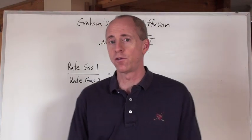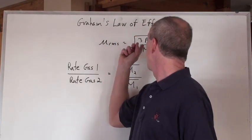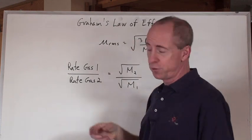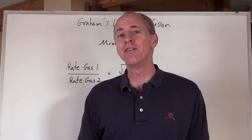So there's something cool that you can derive from that root mean square velocity equals the square root of 3RT over molar mass, and it's called Graham's Law of effusion.